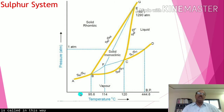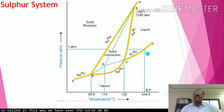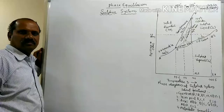In this way, we have seen all six curves: curve AB, curve BC, curve CD, curve BE, curve CE, and curve EG. All curves represent monovariant systems where two phases are in equilibrium.